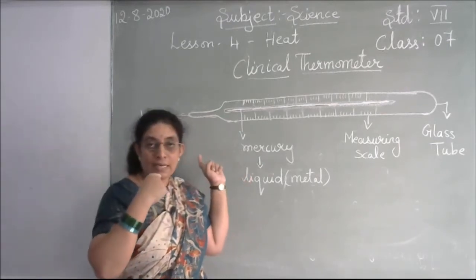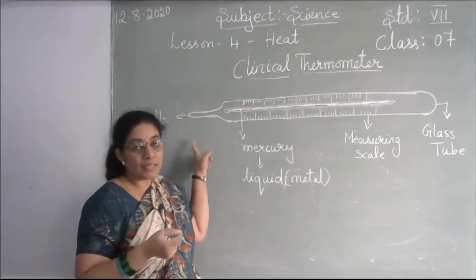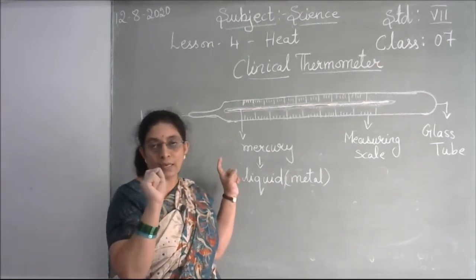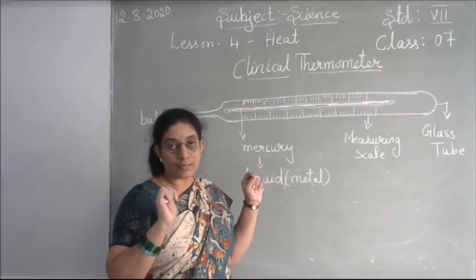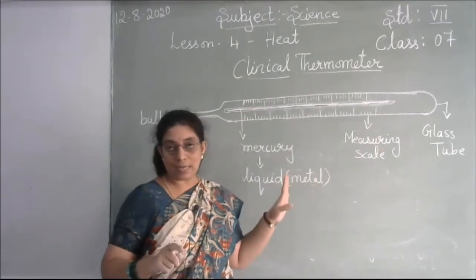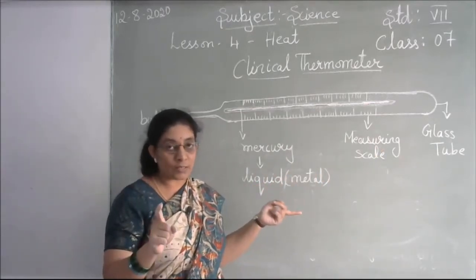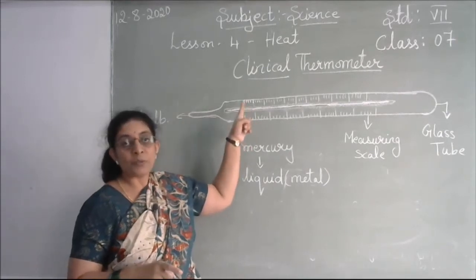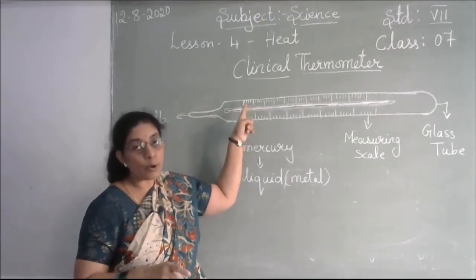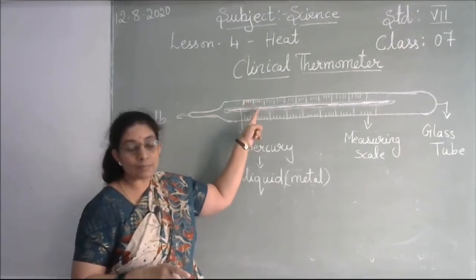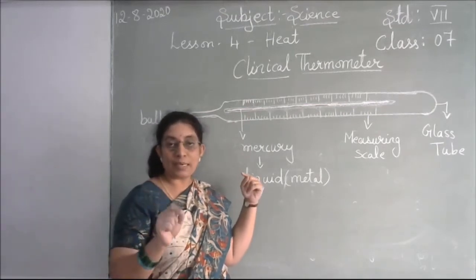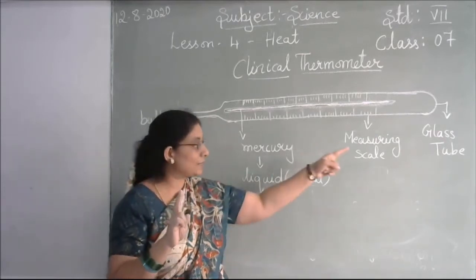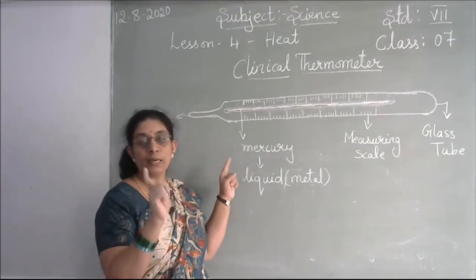You may have heard doctors say 'don't bite it, just keep it under your tongue.' There are two reasons: first, it is made of glass, so if you bite it, it will break; second, the liquid mercury inside will come out and enter your body, which is dangerous as mercury is poisonous. So they keep the thermometer's bulb under the tongue.